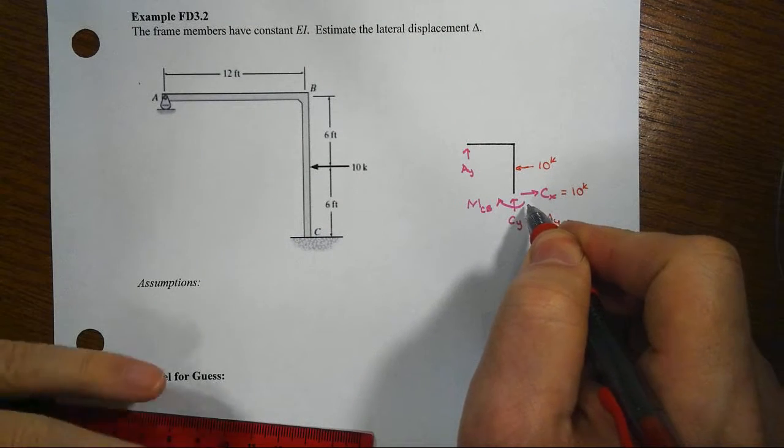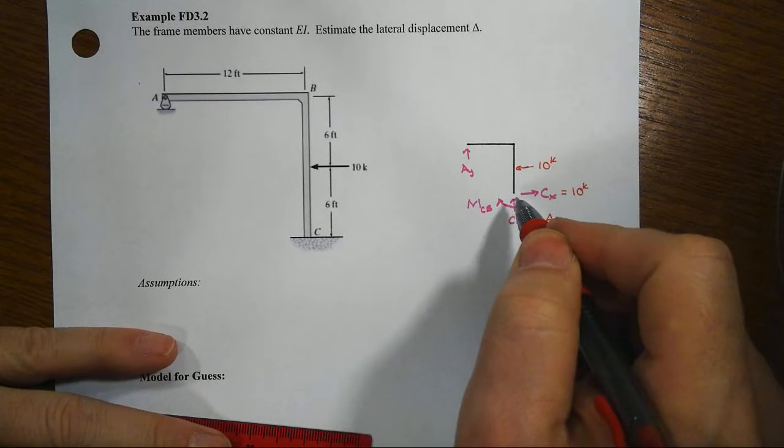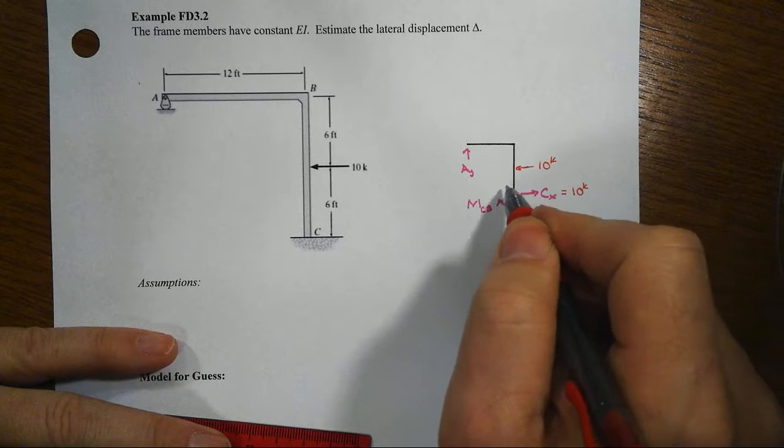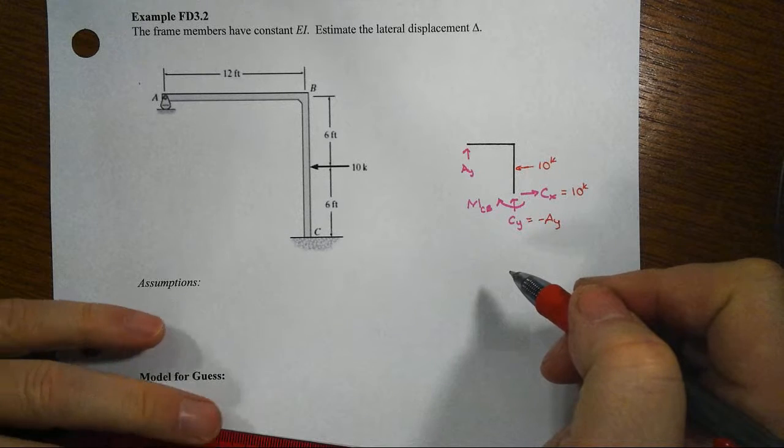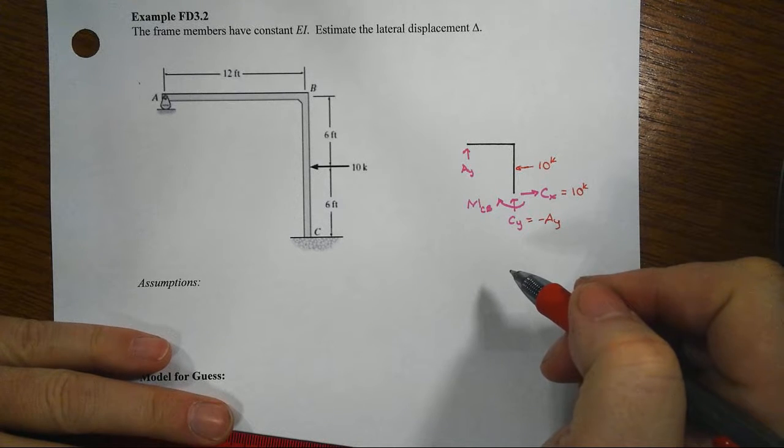That means MCB would be clockwise. So there's a couple of things we can kind of figure out right off the bat.